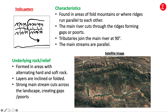Now the trellis pattern. Some characteristics include the fact that it's found in areas of fold mountains or where ridges run parallel to each other. The main river cuts through the ridges forming gaps or ports — terminology found in your grade 11 geomorphology section.